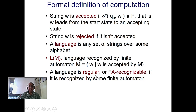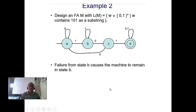A language is called regular if it is accepted by some finite automata — sometimes called a finite state machine. All these terms refer to the same thing.